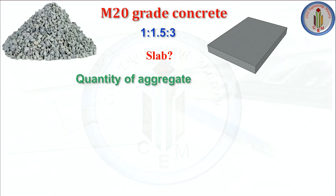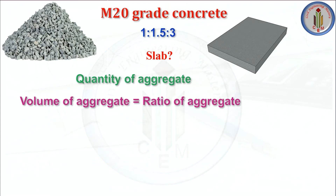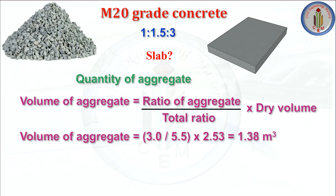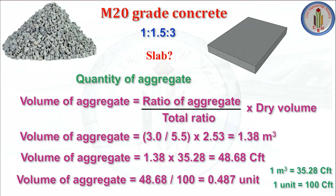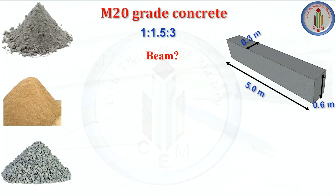Next, let us calculate quantity of aggregate. Volume of aggregate equals ratio of aggregate divided by total ratio, multiplied by dry volume — 3 divided by 5.5 multiplied by 2.53 — equals 1.38 cubic meter. Converting to CFT and then to units, we get 0.487 unit of aggregate. We have completed the slab materials.